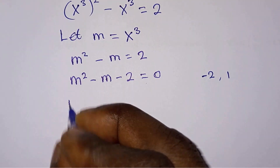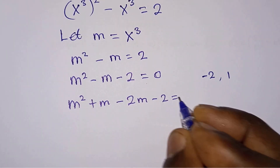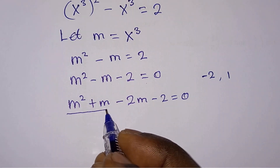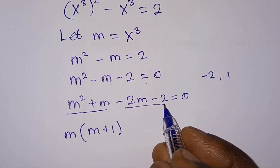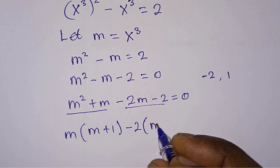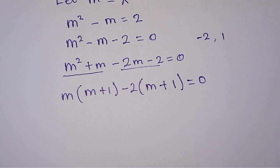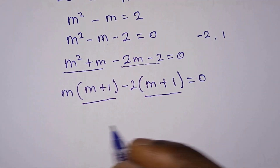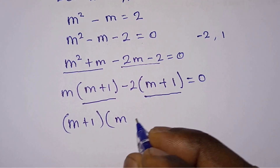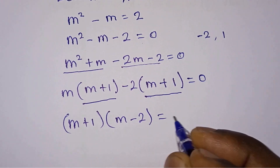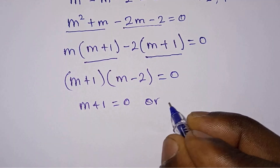So let's put these values into the equation: m squared plus m minus 2m minus 2 is equal to 0. From the first two terms we take m out, giving m times (m plus 1). From the last two terms we take negative 2 out, leaving (m plus 1). So we factor to get (m plus 1)(m minus 2) is equal to 0.